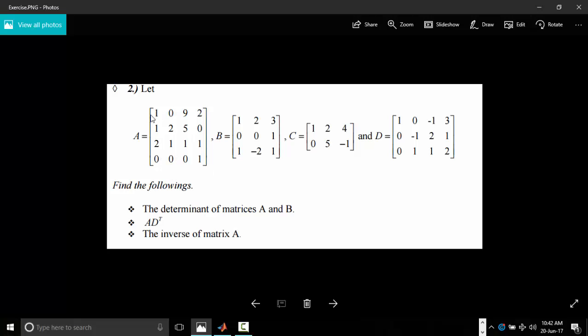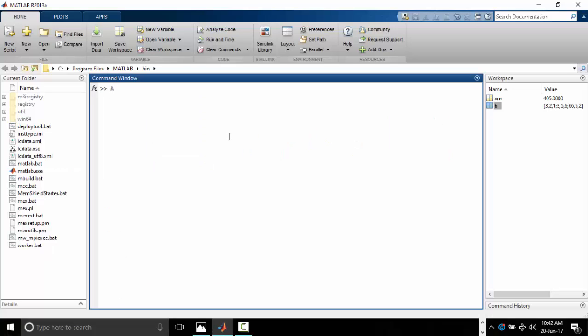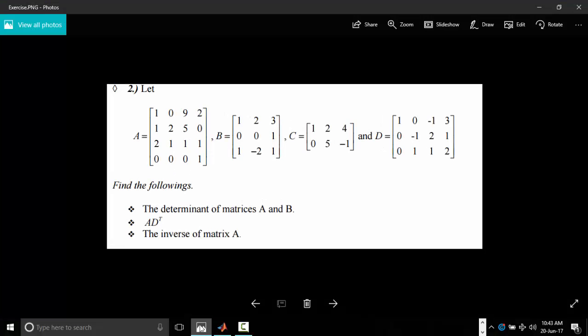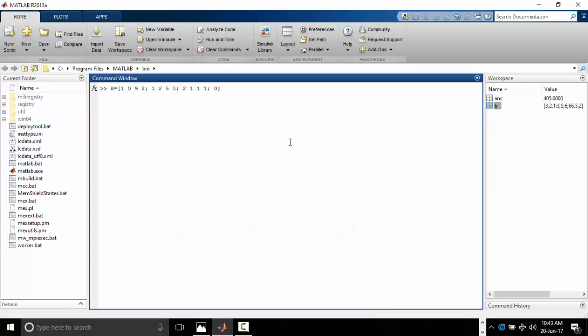So let's declare our A. We have A to be 1092. So just write your A, open your MATLAB and write A colon, 1092, colon 1250, 2110, 0001. So we've declared our A. These are matrix A.